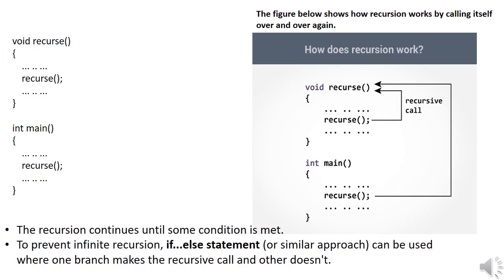Then what will happen in the case of the 'recurs' function? You can see on the right side that when I called the function 'recurs' in the main function, the control goes to the function definition. Inside the function definition, I call the function 'recurs' again, and the control goes back to the function definition and executes the set of statements. This will continue until some condition is met. To prevent infinite iterations, you can use an if-else statement or a similar approach inside the function definition.